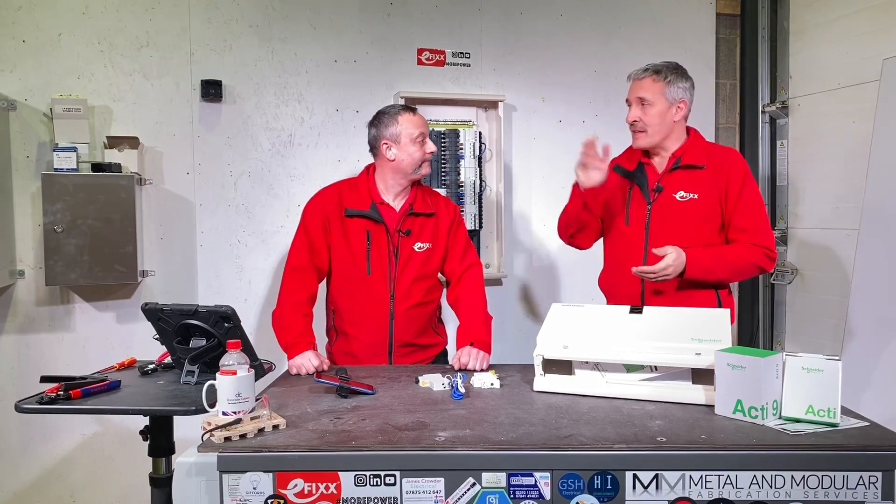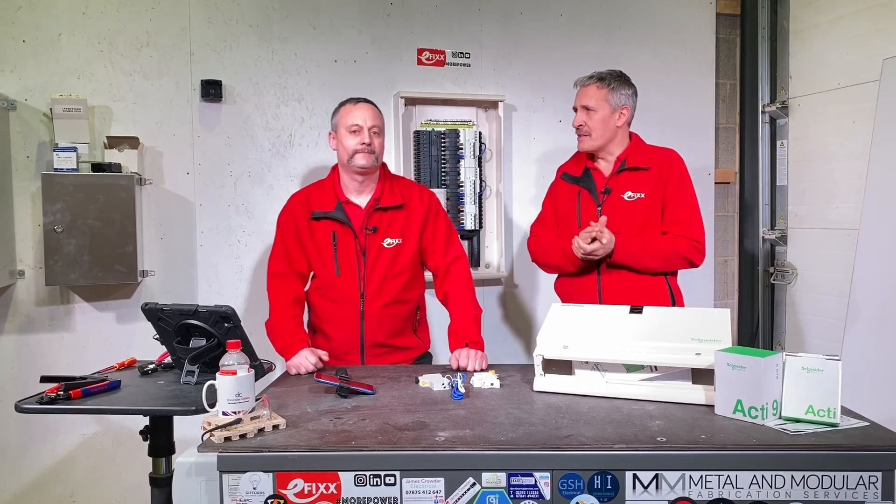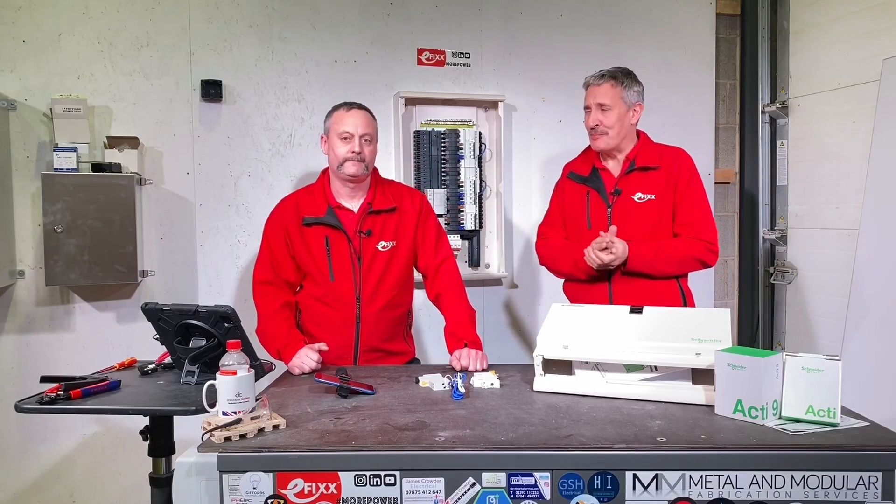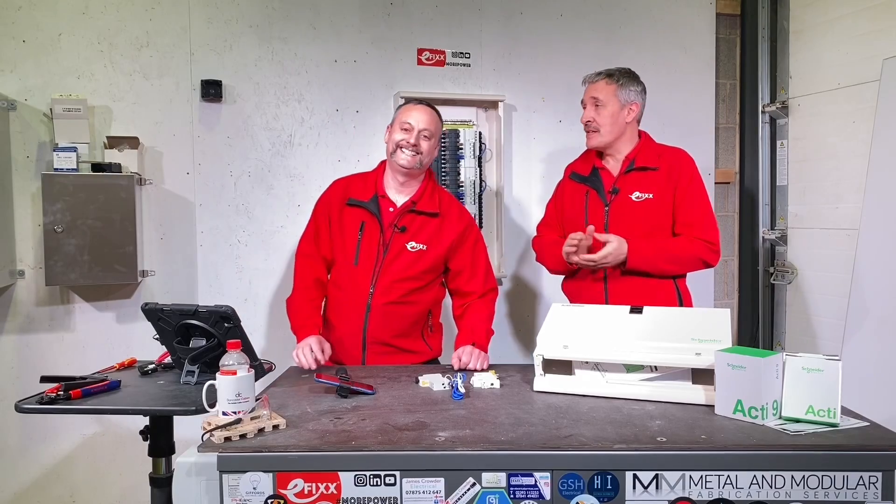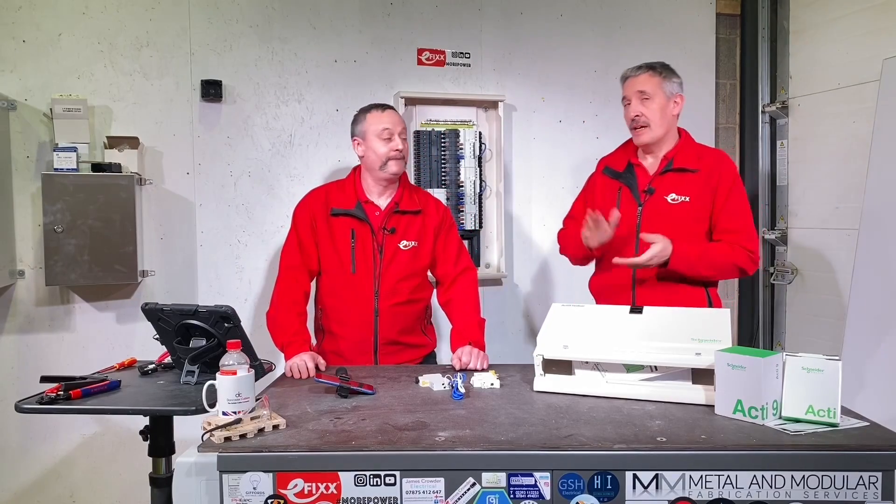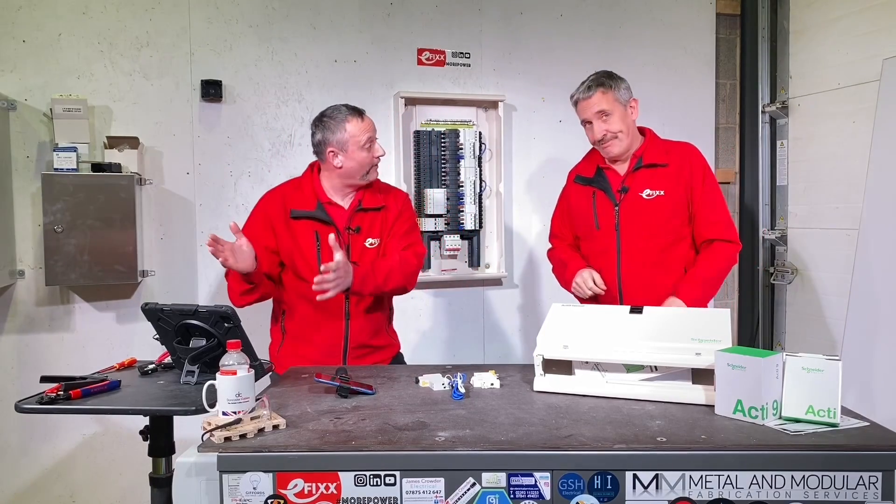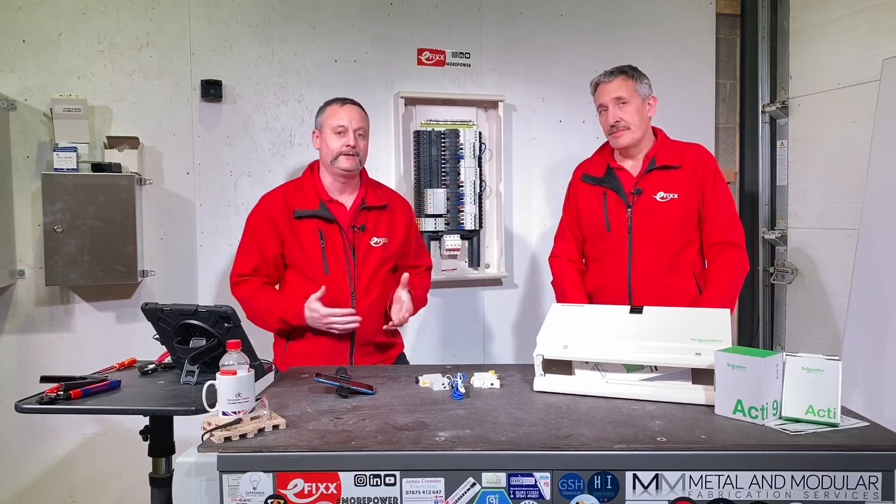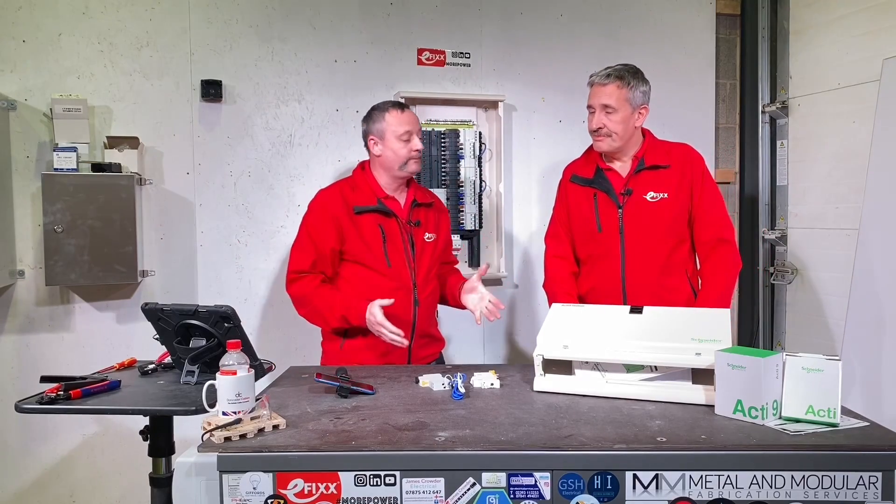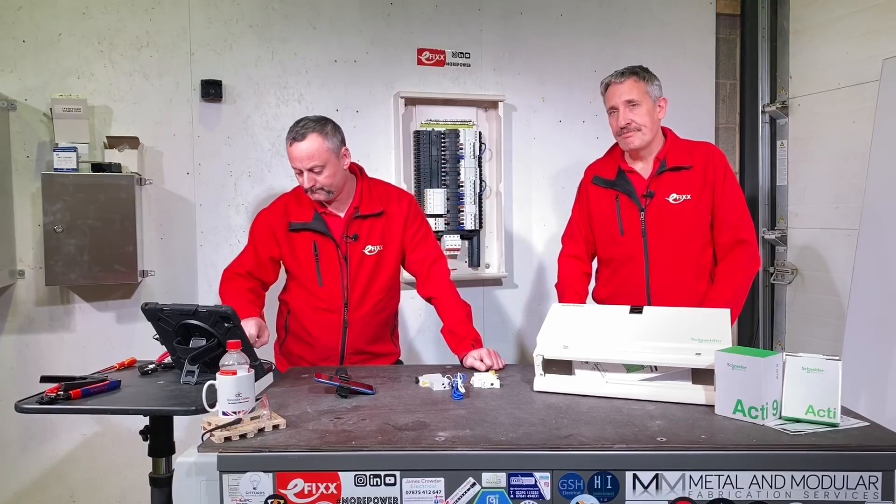You'll notice in there we had a three-phase RCBO which is quite a rare item. Now obviously you've got a choice these days, more and more sockets need RCD protection. The RCD itself could either be in the socket outlet or it could be in the distribution board and we chose in this case in the distribution board. Let's see how easy it was to put that RCBO together.